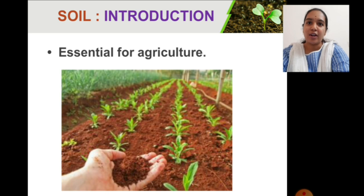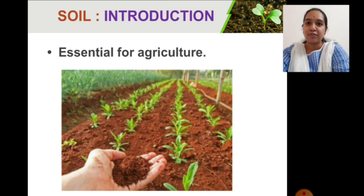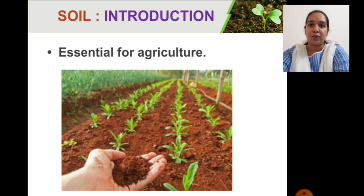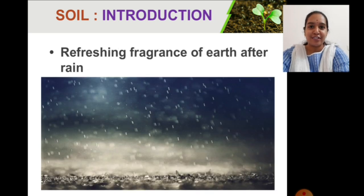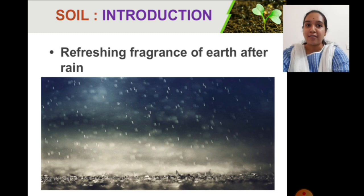Coming to soil in relation with agriculture — you all know where we get food from: by farming, also called agriculture. It is the most ancient livelihood for many people, and for agricultural purposes soil plays a key role. As the rainy season approaches, we can remember the fresh fragrance of earth after rain, which is due to the fragrance from the soil.